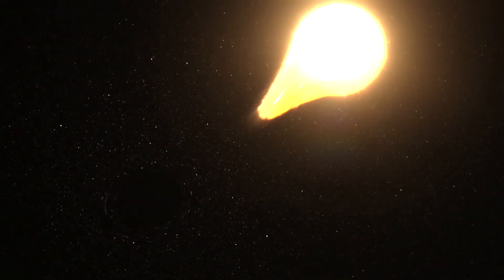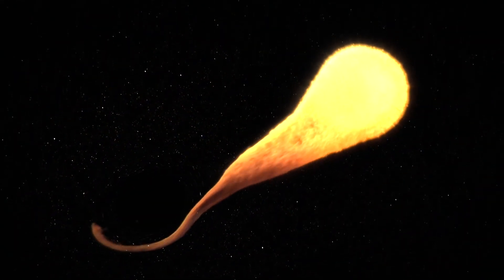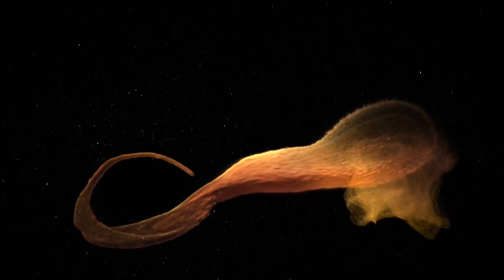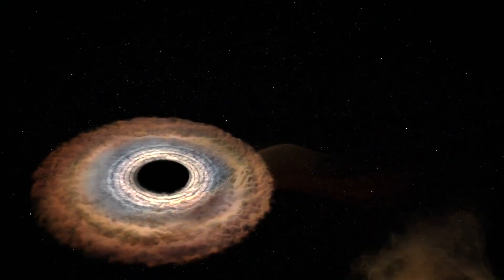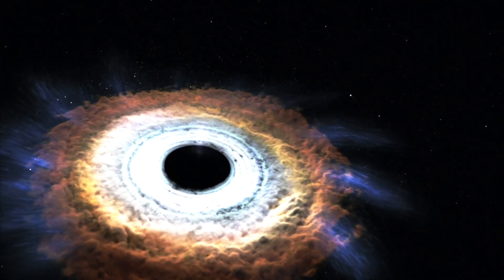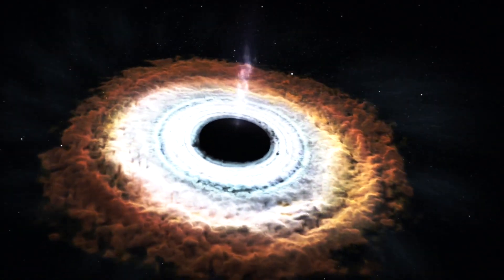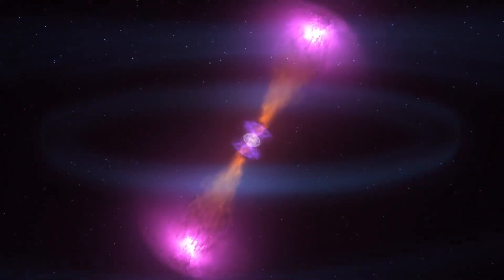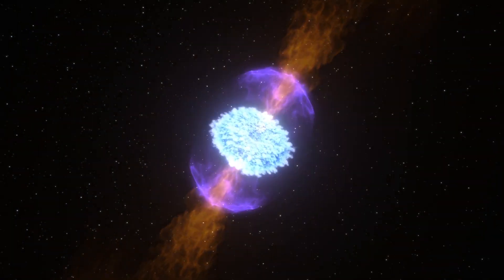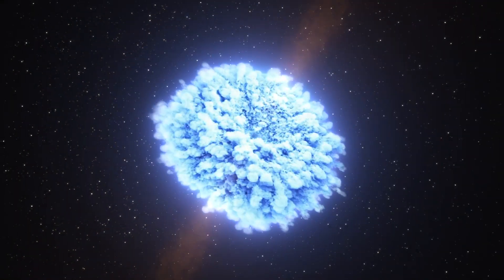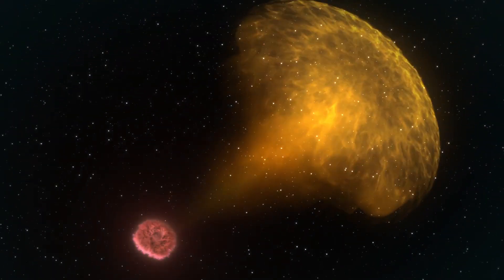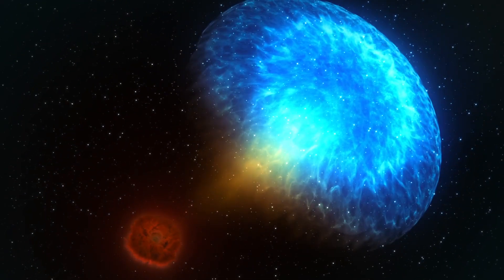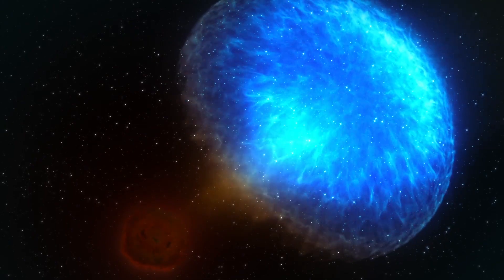As the black hole consumes matter, it releases energy in the form of powerful jets of plasma that shoot out from its poles. These jets travel at nearly the speed of light and create shockwaves that heat up the gas around them. The jets also inflate two giant bubbles of gas that extend for hundreds of thousands of light-years on either side of Phoenix A. These bubbles glow in radio waves and form a structure known as the radio phoenix.